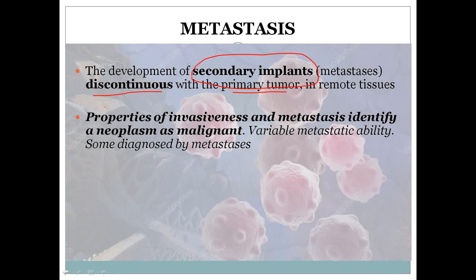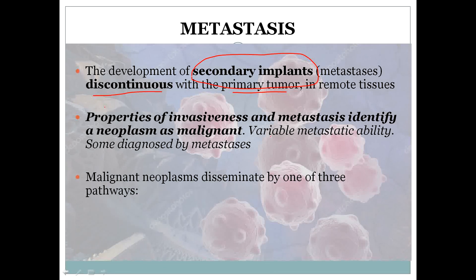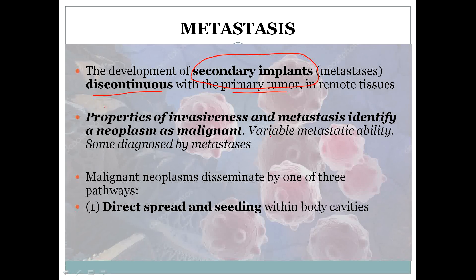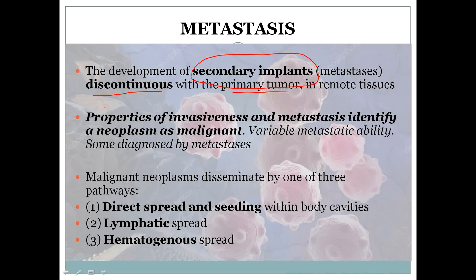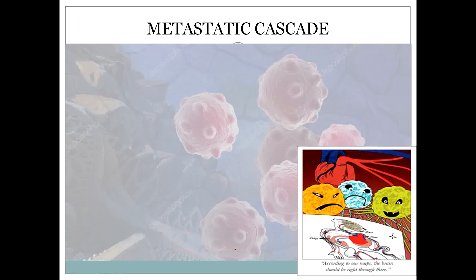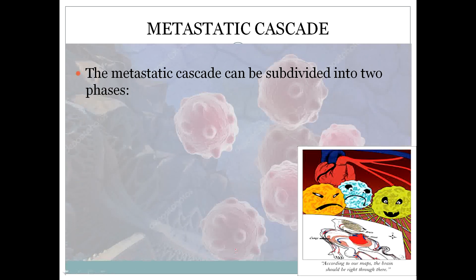The most important thing to remember is that malignant is always invasive and malignant tumors are going to metastasize. Some are diagnosed only when they have metastasized to far away areas, which is very unfortunate. Malignant neoplasms disseminate by three routes: first is direct spread or seeding within body cavities such as peritoneal, pericardial, and pleural cavities; second is lymphatic spread, which is mainly for carcinomas; and third is hematogenous spread, mainly for sarcomas, though exceptions exist.